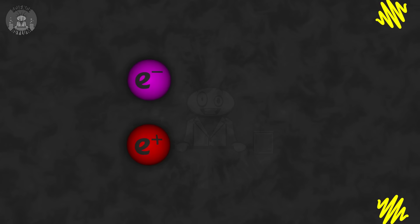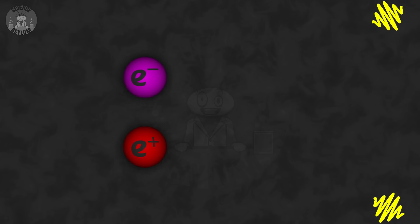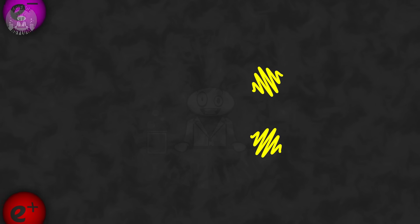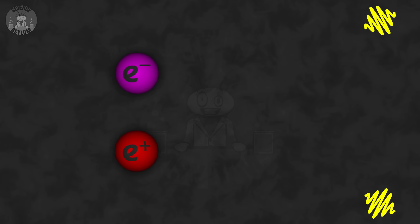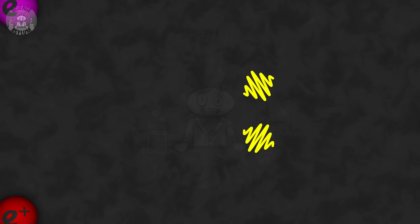Now let's look at energy. It happens to be the same before and after this reaction. It might have changed forms — mass and kinetic energy before, and photon energy after — but the total amount never changes. Conservation of energy shall not be violated! We've defined energy in such a way that it obeys that rule, which allows us to predict how energetic the resulting photons will be.